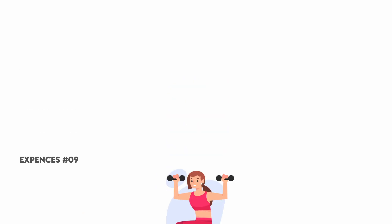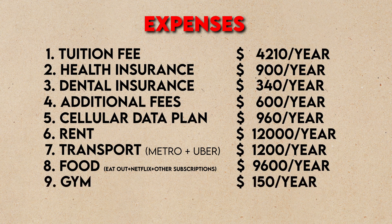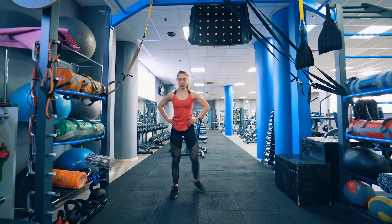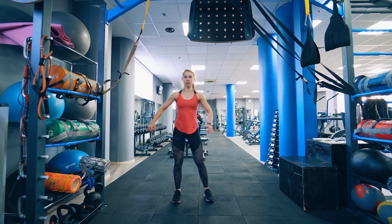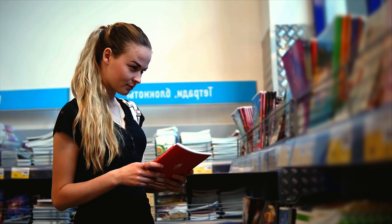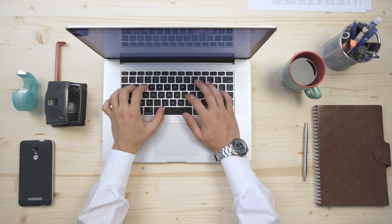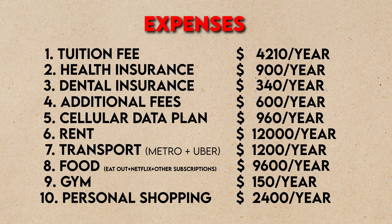The next expense is optional — a gym subscription. I have a gym at my university for around $50 per semester, or $150 a year. Anywhere else it will cost a lot more, so take advantage of your university's gym if available. Finally, budget around $200 per month for personal shopping — clothing, stationery, devices, gadgets. You won't spend it every month, but some months you'll buy something like an iPad or MacBook that can throw off your entire year's budget.